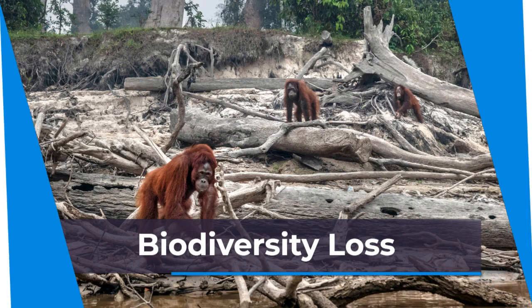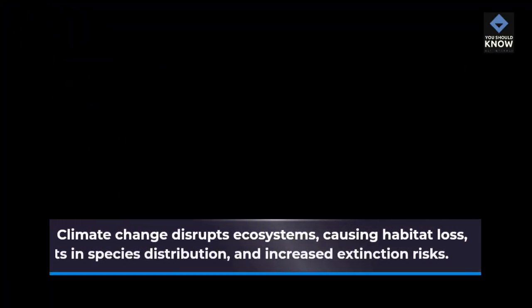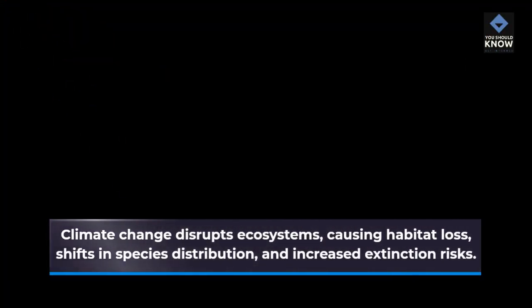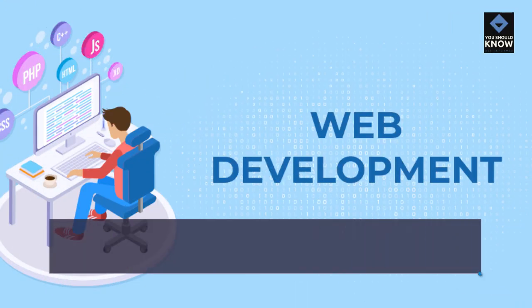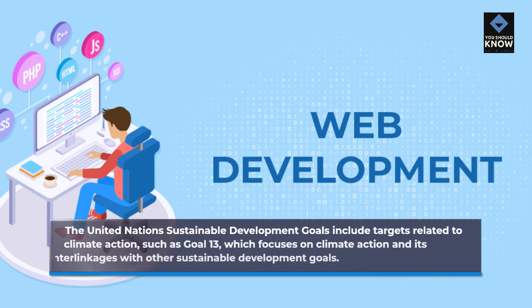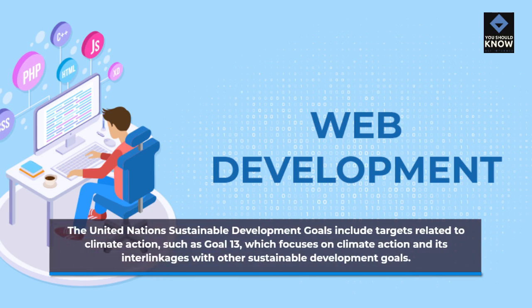Biodiversity loss: climate change disrupts ecosystems, causing habitat loss, shifts in species distribution, and increased extinction risks. Sustainable development goals: the United Nations Sustainable Development Goals include targets related to climate action, such as Goal 13, which focuses on climate action and its interlinkages with other sustainable development goals.